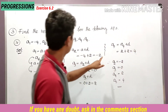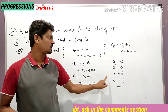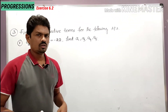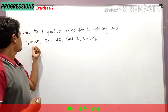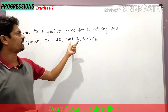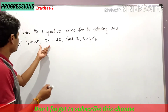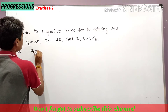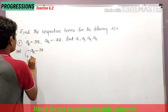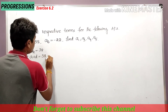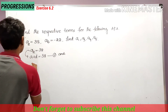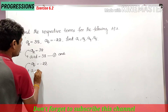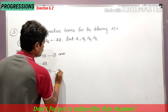Fifth bit of the third problem: a2 is equal to 38, a6 is equal to minus 22. Find a1, a3, a4, and a5. a2 can be written as a plus d equal to 38 — equation 1. a6 can be written as a plus 5d equal to minus 22 — equation 2. Subtracting equation 1 from equation 2.